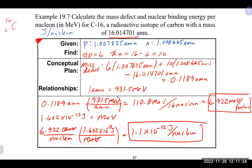You could also have gone with E = mc² and used Avogadro's number to the 26th to convert to joules first, then converted to MeV on the back end — either approach works fine.